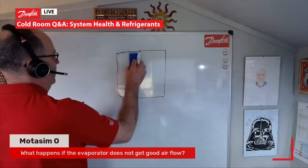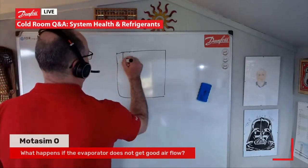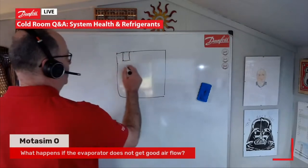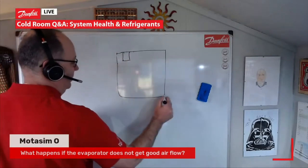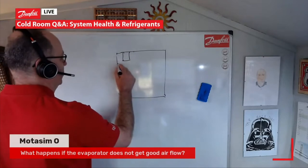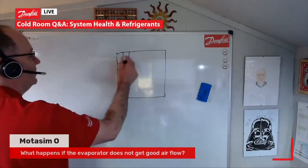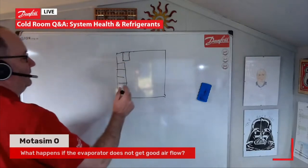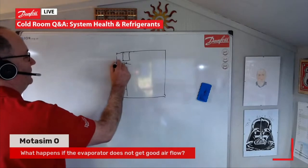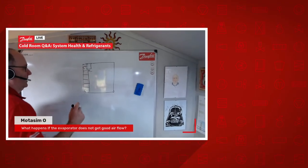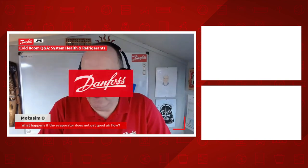Probably the biggest airflow issue in a cold room is when operators store product on pallets or racking around the evaporator, restricting airflow to the back of the coil. That's the most common problem I see when I'm on site with cold rooms. So yeah, the evaporator needs good airflow.